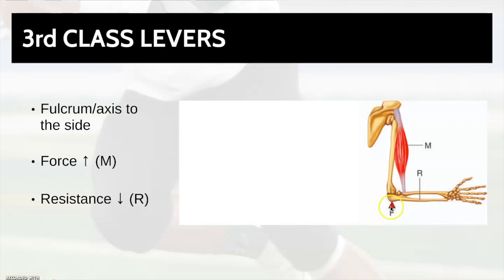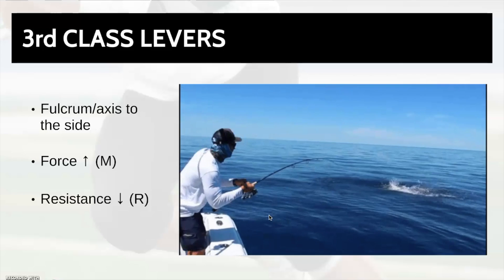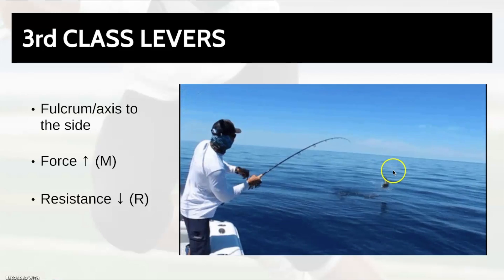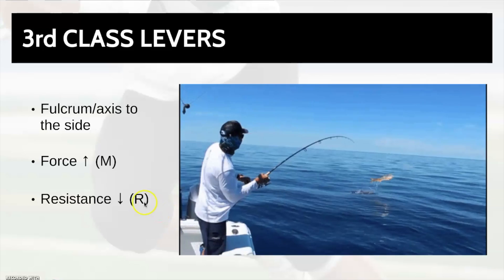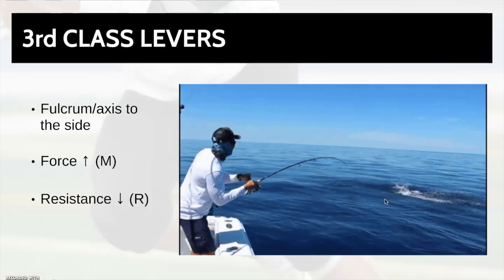An example in the body: we can see the fulcrum here, which is the elbow joint. We can see the resistance or the weight, which is the arm and forearm pulling or pushing down. And we've got the force, which is the bicep. So as you can visualise, when the bicep contracts, it pivots around the fulcrum and the arm extends up. A real life example of this is fishing. The fulcrum is where the hands meet the fishing rod, the resistance is at the end — the fish pulling down — and the force is the person contracting their biceps and pulling up to make sure the fish doesn't pull them into the ocean.